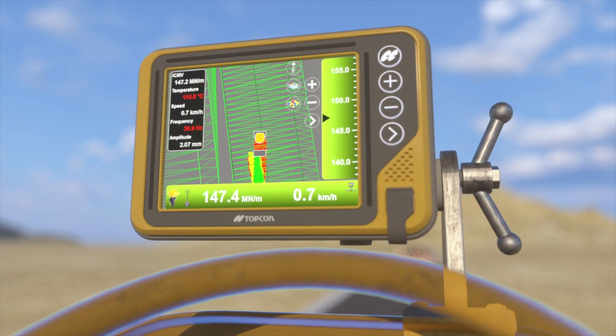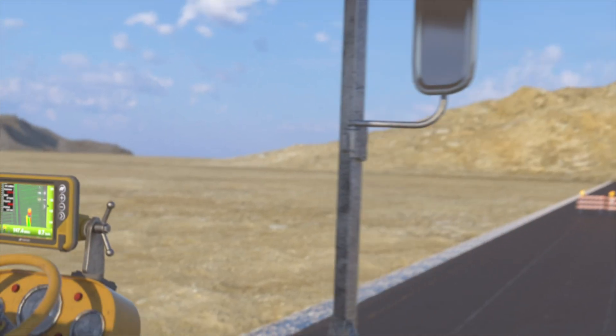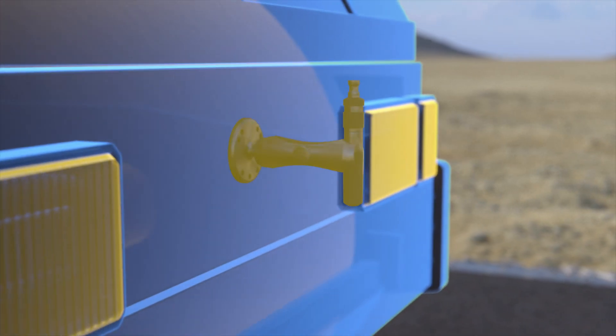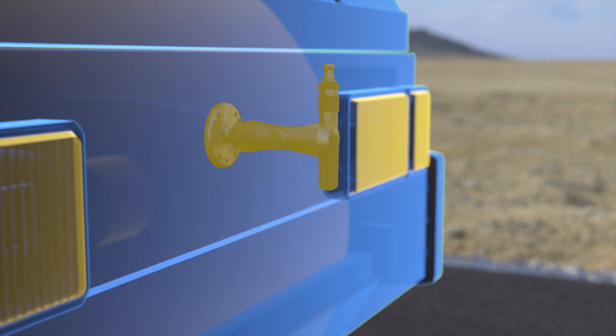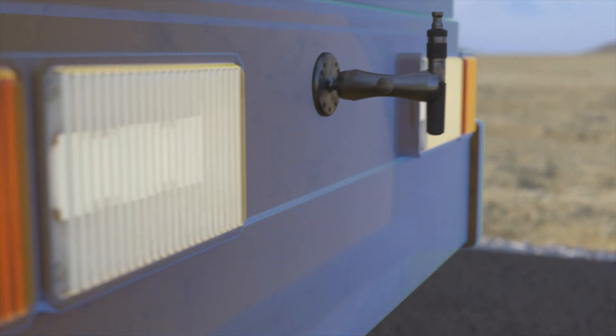This allows the machine operator and foreman to see where the compactor is at any given time. With temperature sensors mounted on both sides of the machine, the operator can easily operate within the optimal temperature range.